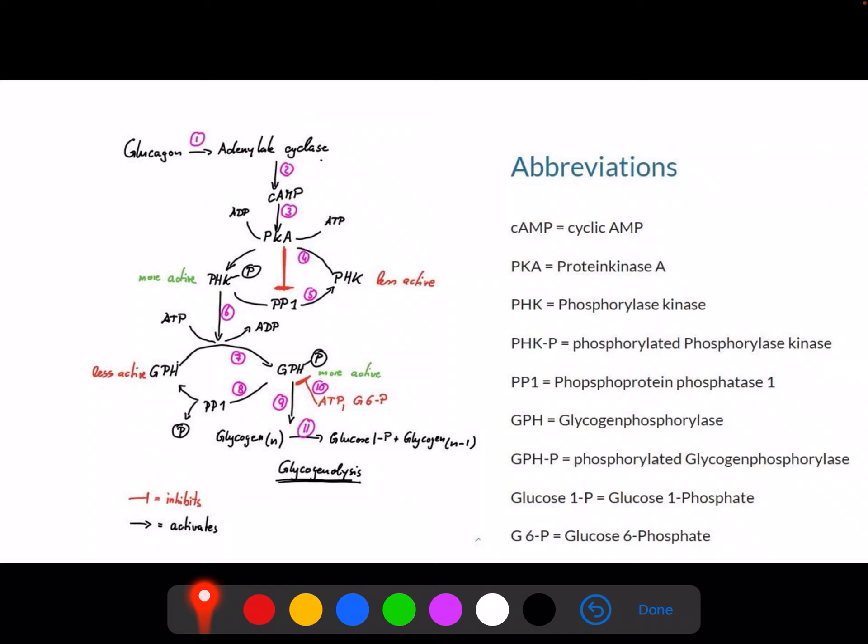The activity of adenylate cyclase is basically to take ATP and convert that into cyclic AMP. Cyclic AMP is a second messenger molecule that can activate and also deactivate a number of other molecules in the cell. In our case, cyclic AMP will activate protein kinase A, PKA.